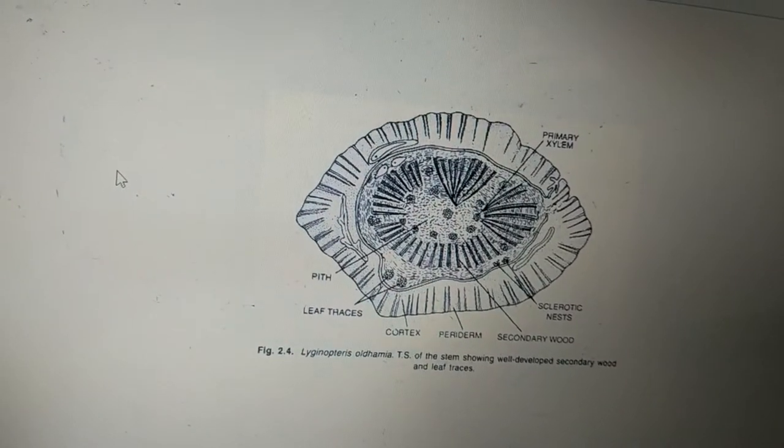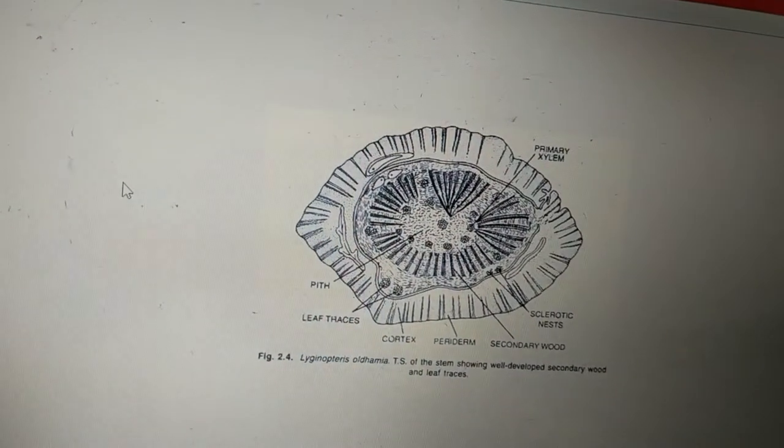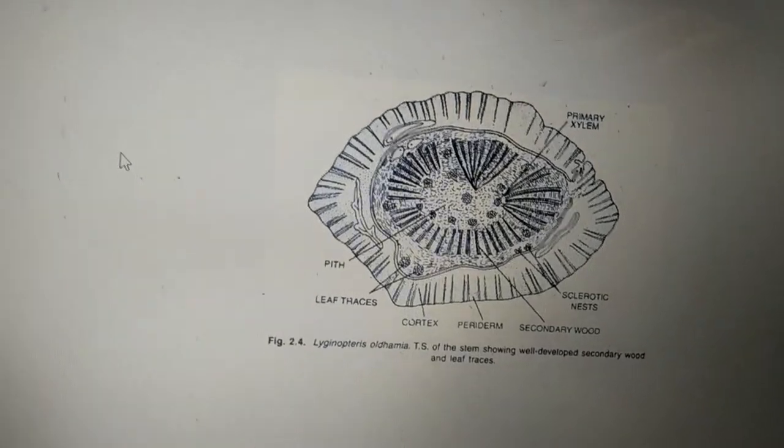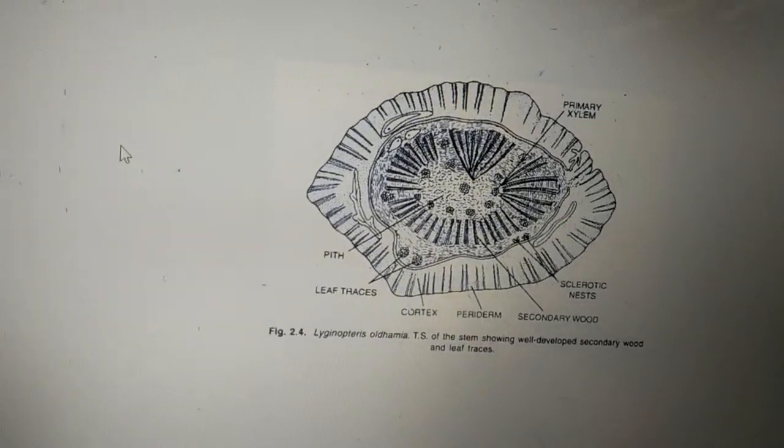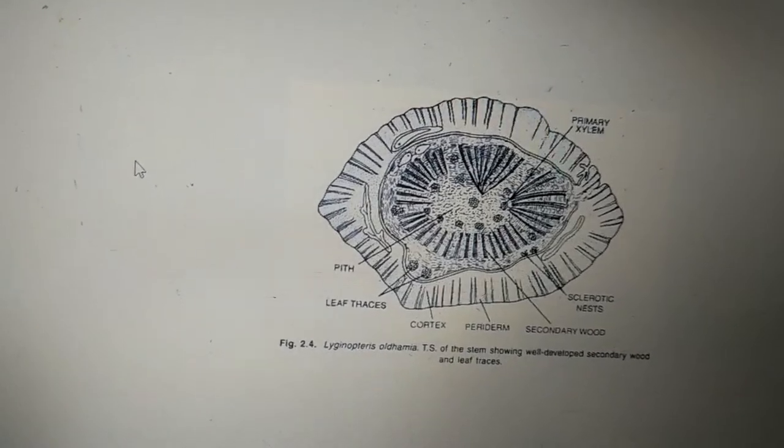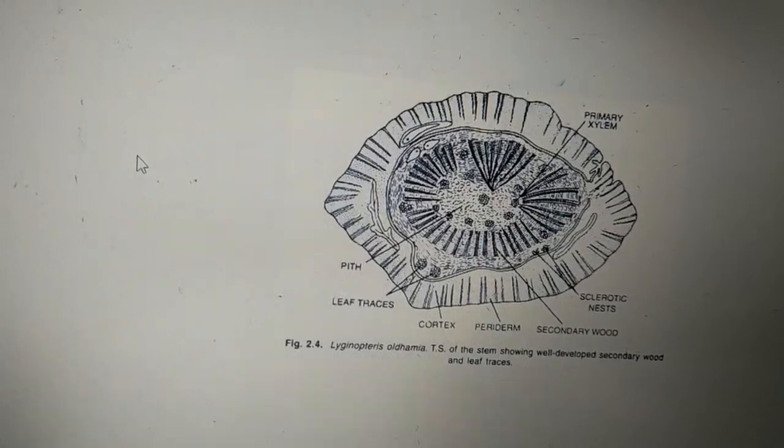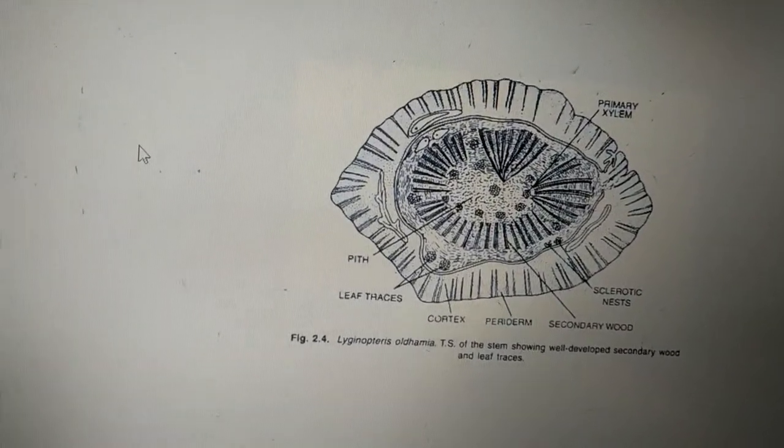In exarch, protoxylem is situated towards the periphery and the metaxylem towards the center. Opposite will be the endarch, whereas in mesarch, metaxylem develops both internally and externally to the protoxylem.